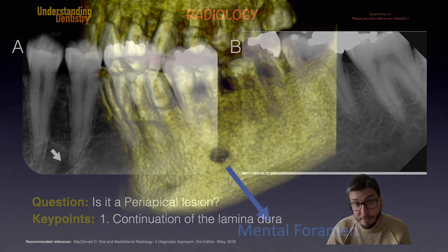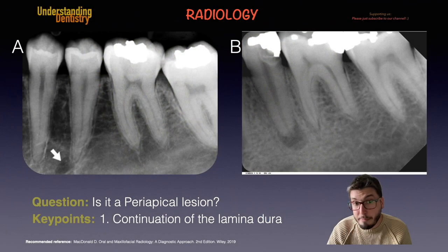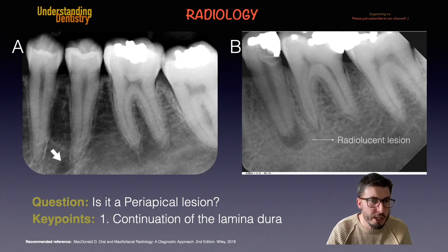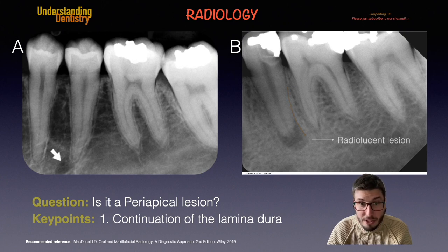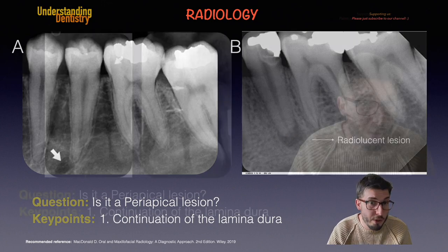The white arrow is showing the mental foramen, which is actually the expected location of the mental foramen on periapical radiographs. On radiograph B, however, we do have a radiolucent lesion. Following the shape of the lamina dura here, it comes normally from the alveolar crest downwards, but then gets in continuation with the lesion, leaving the apex with no lamina dura. The area marked in red shows the apex of the root with absolutely no lamina dura there.